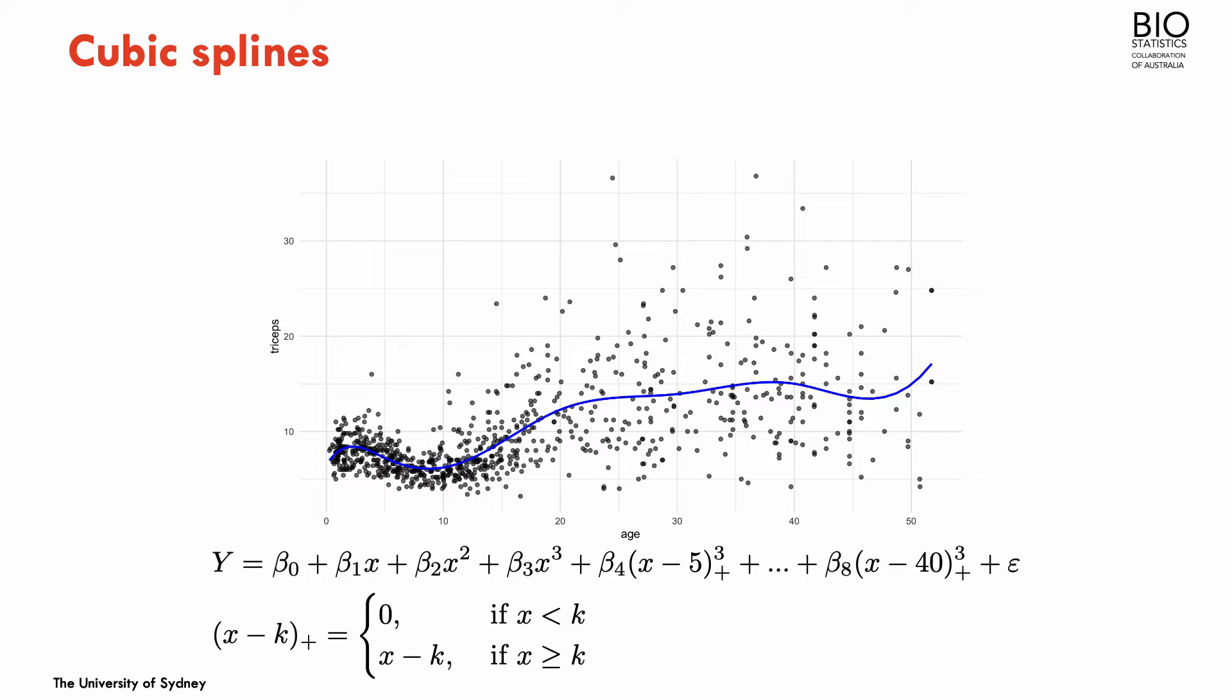I told you before in the first section that the knots I've chosen were chosen in an ad hoc manner. I've placed a knot at the age of 5 and then 10, 20, 30, and 40. This was not chosen in a principled way. Now I'd like to talk a little bit more about the issue of the knots.